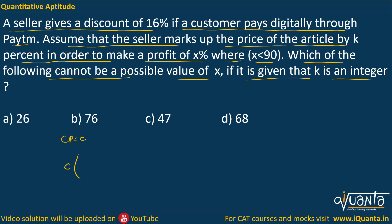After x percent profit we can write it as C into 1 plus x by 100. This will be the SP. This SP will also be equal to, first of all C was the cost price, we marked it up by k percent, and then discount of 16% is provided.